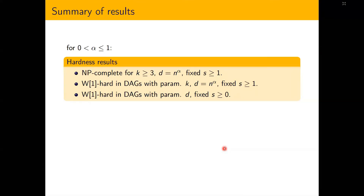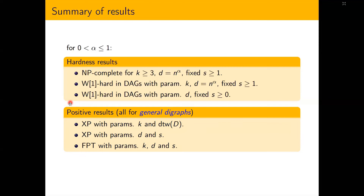As a summary of our results: we showed the disjoint in-off path problem is NP-complete for fixed k at least 3, regardless of D, whenever S is fixed and at least 1. We showed the problem is W1-hard indexed by parameter k for the same choices of D and S. We also showed it is W1-hard indexed by parameter D for every fixed non-negative S. On the positive side — and these results are for general digraphs — the problem is XP with parameters k and the directed treewidth of the input digraph, XP with parameters D and S, and FPT with parameters k, D, and S.